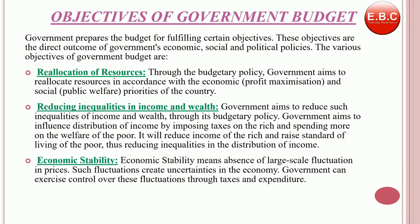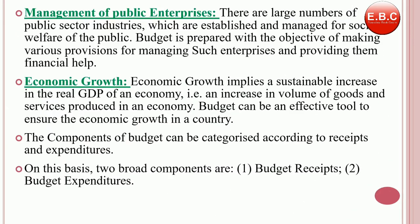The next objective is economic stability. It means the absence of large-scale fluctuations in prices. Such fluctuations create uncertainties in the economy. The government can exercise control over these fluctuations through taxes and expenditure. Next, we have management of public enterprises. There are a large number of public enterprises, also known as PSUs, which are established and managed solely for the welfare of the public. The budget is prepared with the objective of making various provisions for managing such enterprises and providing them financial health.